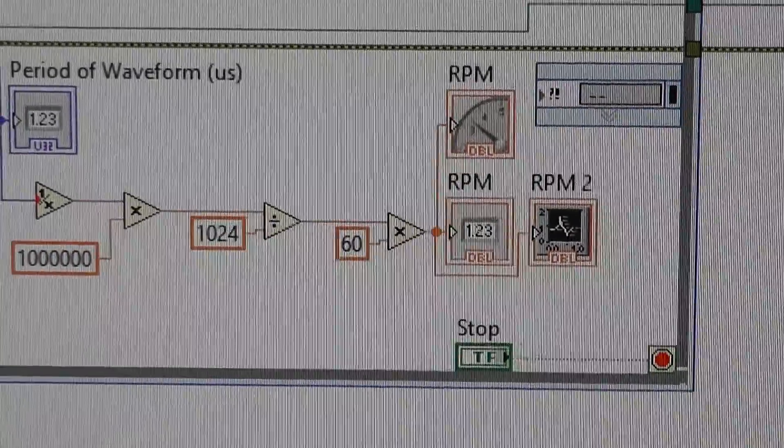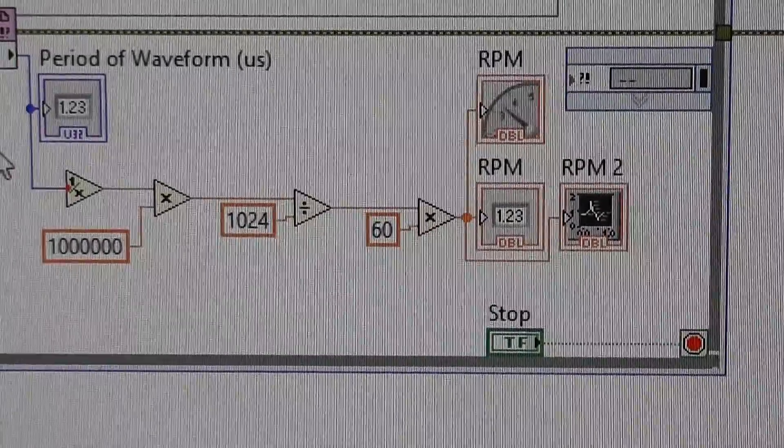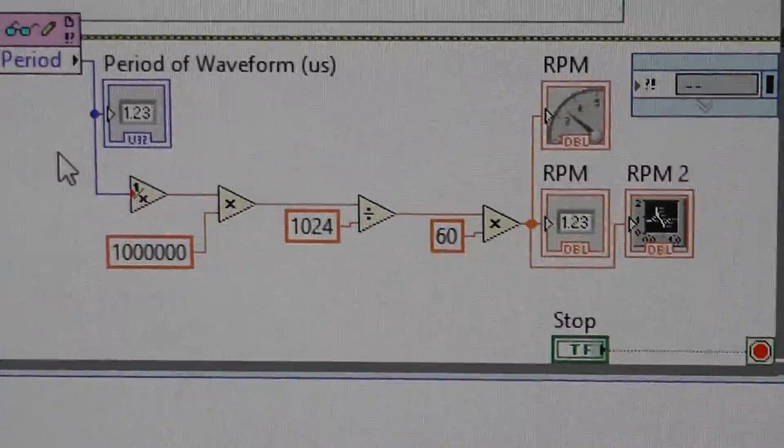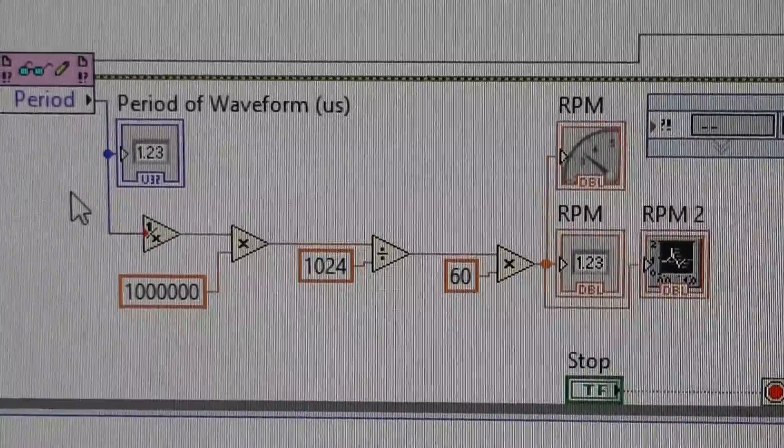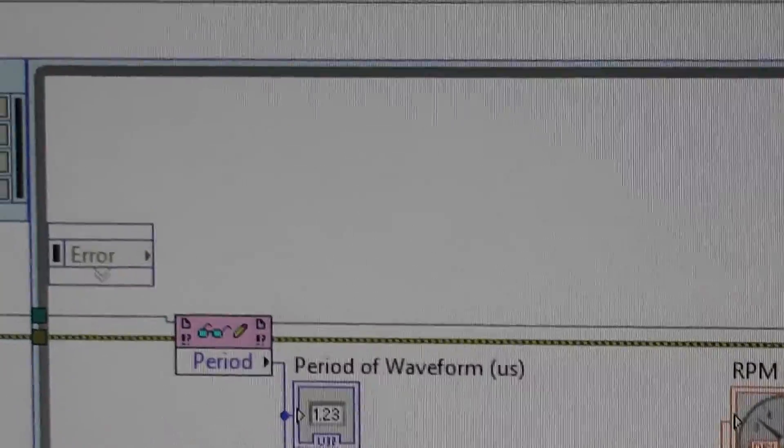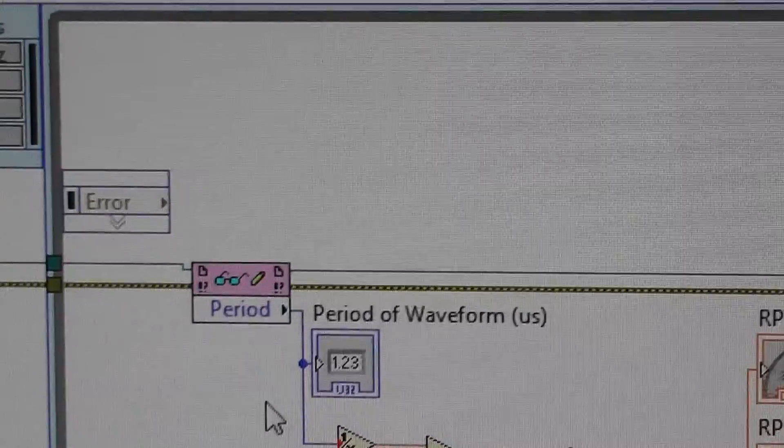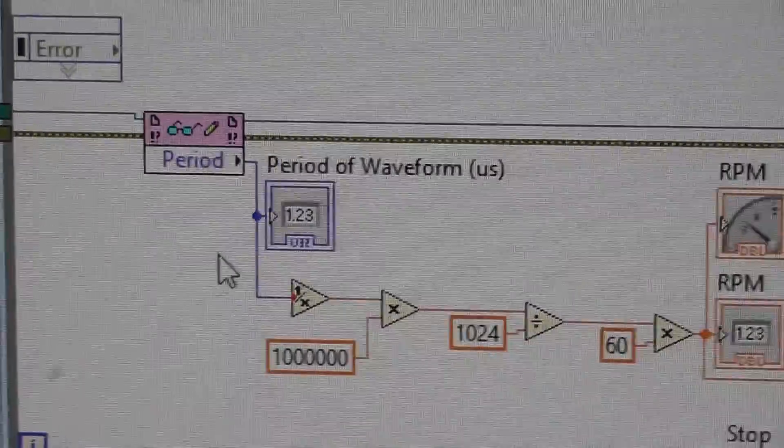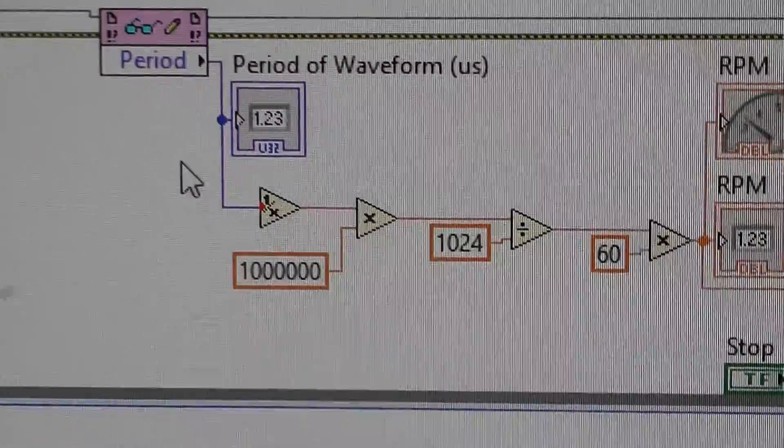And then the rest of it is to do with the encoder that I've attached to give the pulses in this case. So this is an application and it's got 1024 pulses per revolution. Otherwise, one rev per 1024 pulses, and so I have to divide by 1024.